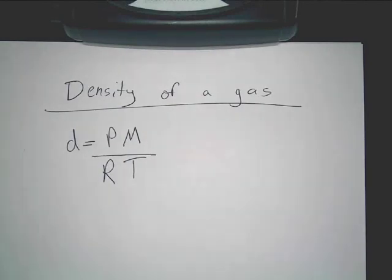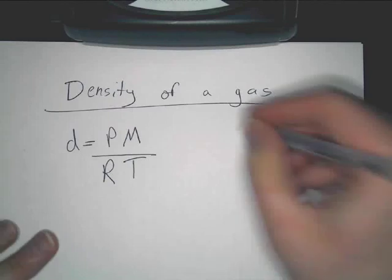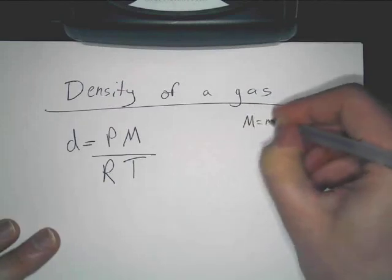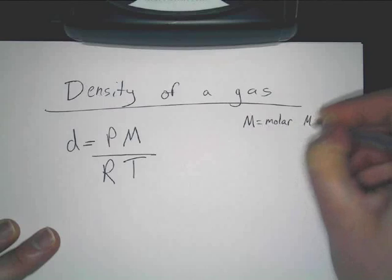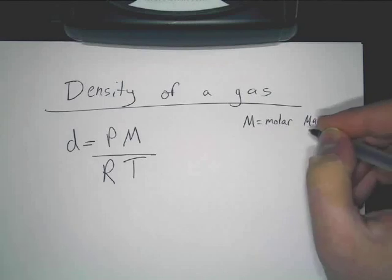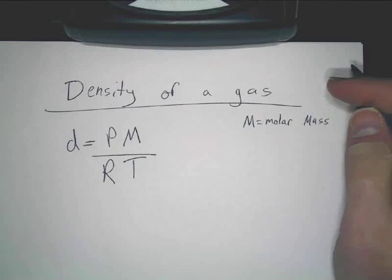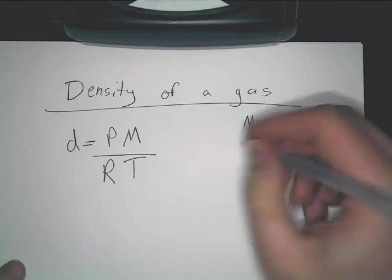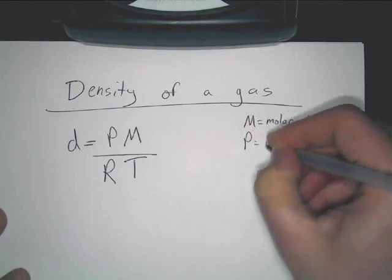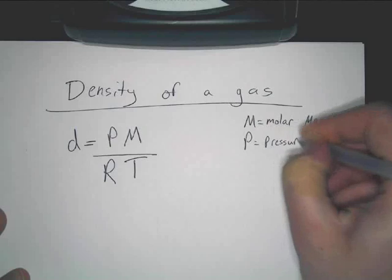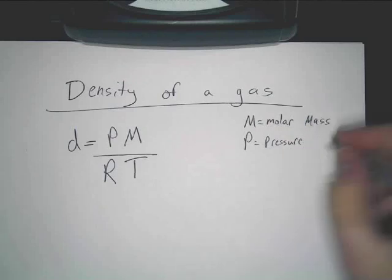I'm going to explain it. So M is equal to molar mass. That would be off the periodic table or if you have to add up, like O2, 16 times 2, whatever. You guys know that. P is equal to pressure. Generally, that should be put into atmospheres.